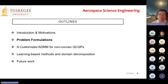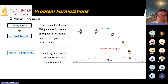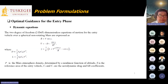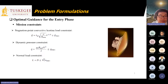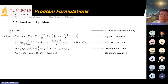In the problem formulation, the mission scenario has two phases: the entry phase and the powered descent phase, which we integrate into an end-to-end Mars EDL problem. For the entry phase, the dynamics use a two-degree-of-freedom model with lift force and drag force. We also consider mission constraints such as the heating load constraint — an upper bound on surface heating — as well as dynamic pressure constraints and normal load constraints.